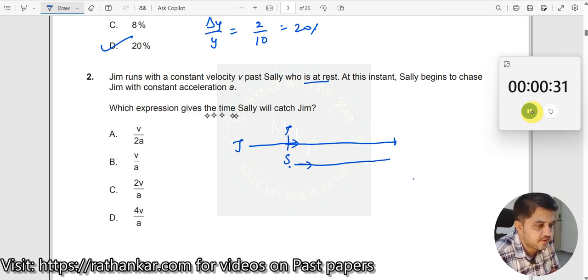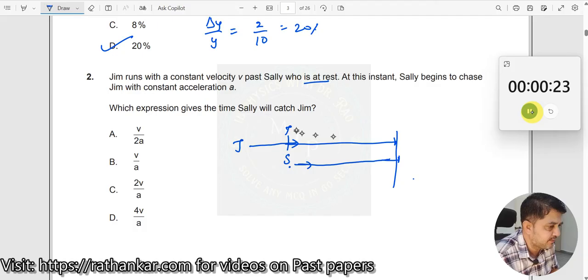Which expression gives the time that Sally will catch Jim? At one point of time, Jim and Sally will meet together. Both of them are moving but somewhere they catch together. So what is the time at which they catch together? Very simple problem.